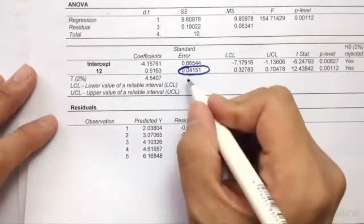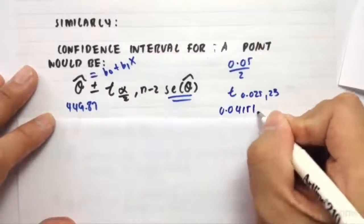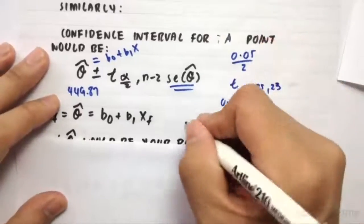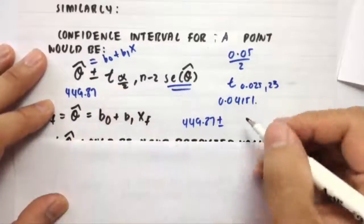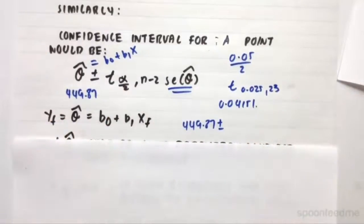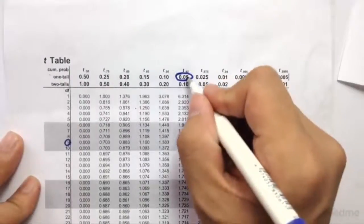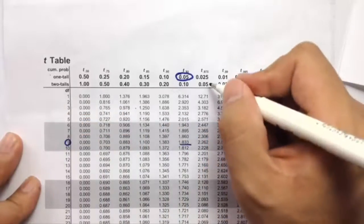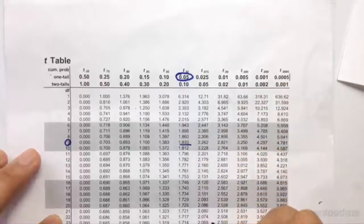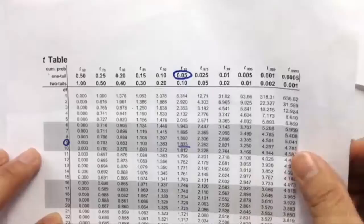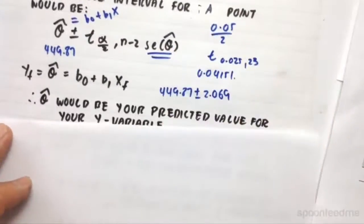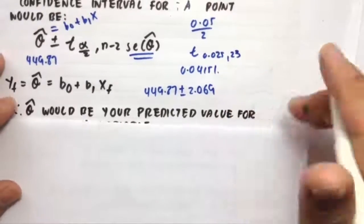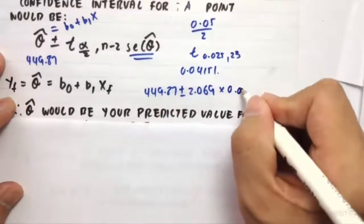So if we did apply this, for example, if our standard error was 0.04151, then the value that we get for Y hat theta would be 449.87 plus or minus, so we have to go to, plus or minus T 0.025, 23. So T 0.025, so down this column, two-tailed tests, 0.05, 23 here. So 2.069, multiplied by the standard error, which we got was 0.04151.